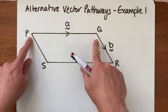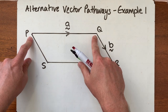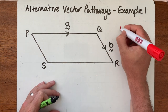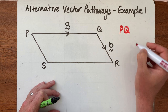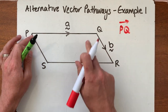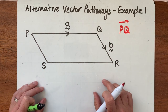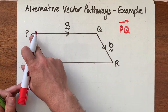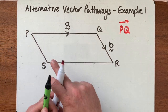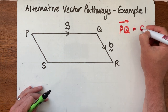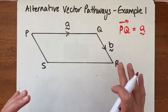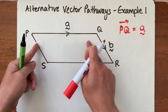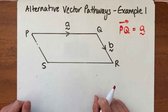You've looked at how to name a vector using the endpoints, so this vector here could be called PQ, because we move from P to Q and the arrow goes in that direction. It has another name too — the vector going from P to Q is also called 'a'. These are its two names, but these are not alternative vector pathways; they are the same vector pathway with two names.